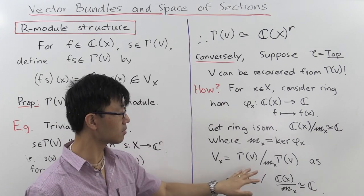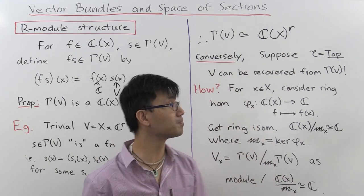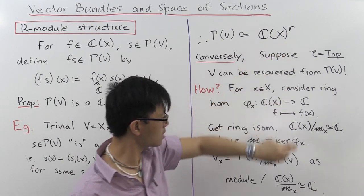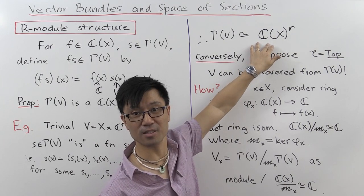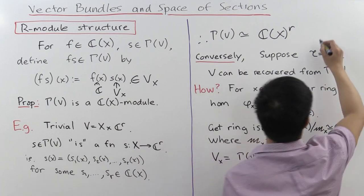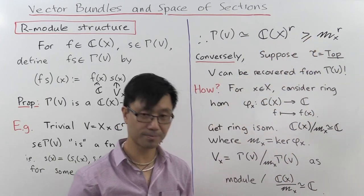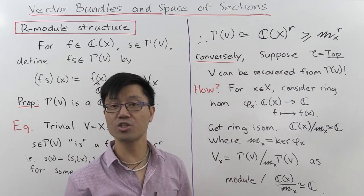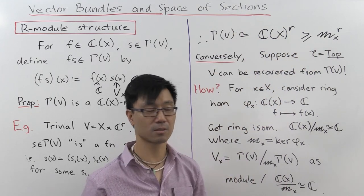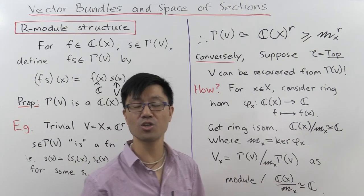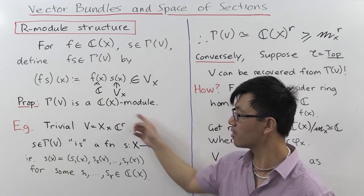Let's have a look at an example and see how that works — this previous example of the trivial vector bundle, where gamma(V) equals just this free module C(X)^r. You can multiply this by m_x, giving you r copies of m_x sitting inside here as a submodule. Then you just take the quotient. When you take the quotient of C(X)^r by m_x · C(X)^r, you get (C(X)/m_x)^r. And what was C(X)/m_x? It's just C, so you get C^r — which is precisely the fibre of this vector bundle above any point. That nicely recovers what you have here.